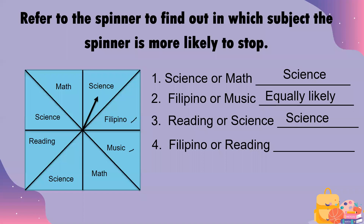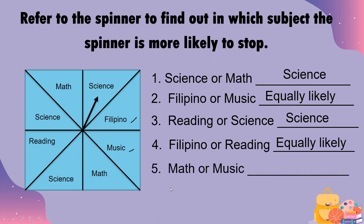Number four, Filipino or reading — we have one reading and one Filipino, so they are equally likely. Number five, math or music — we have two math and one music, so math has a bigger chance of coming out. Thank you and have a nice day.